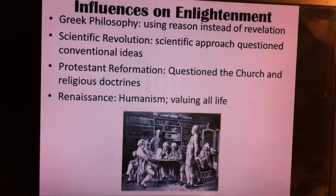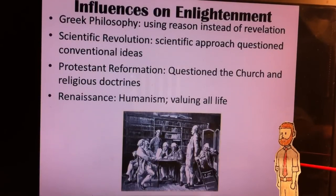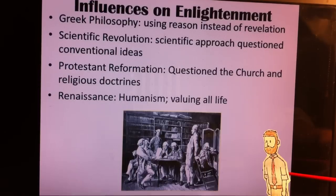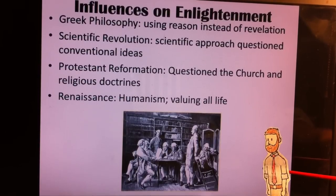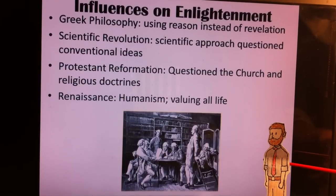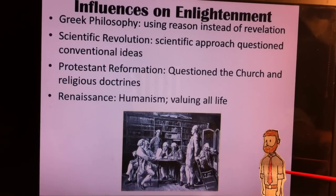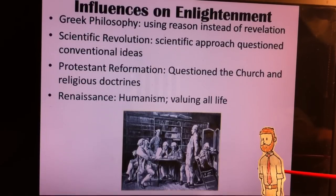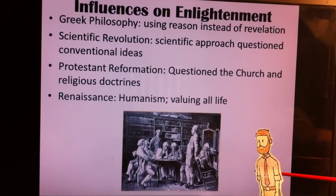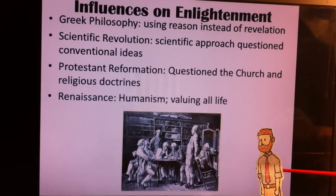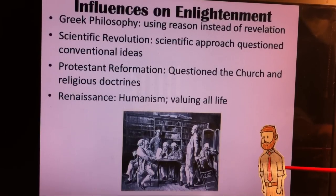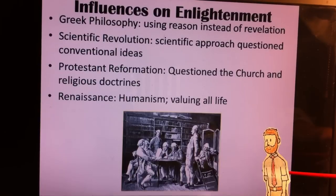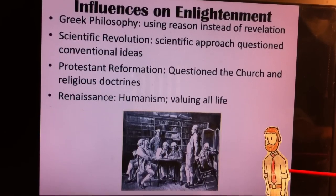There are four main things that influenced Enlightenment. The first one is Greek philosophy — using reason rather than waiting for a revelation or some sign from God to understand things, and a greater reliance on human nature rather than reliance on God. You also have the scientific revolution, which is a scientific approach to conventional ideas, such as whether the Earth was the center of the universe, and being able to question and scientifically prove those conventional ideas.